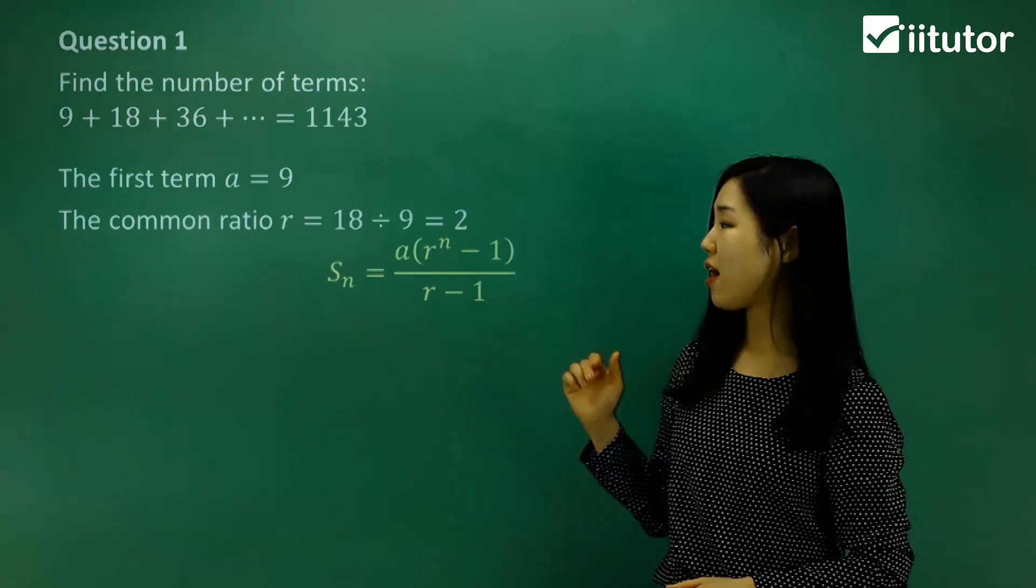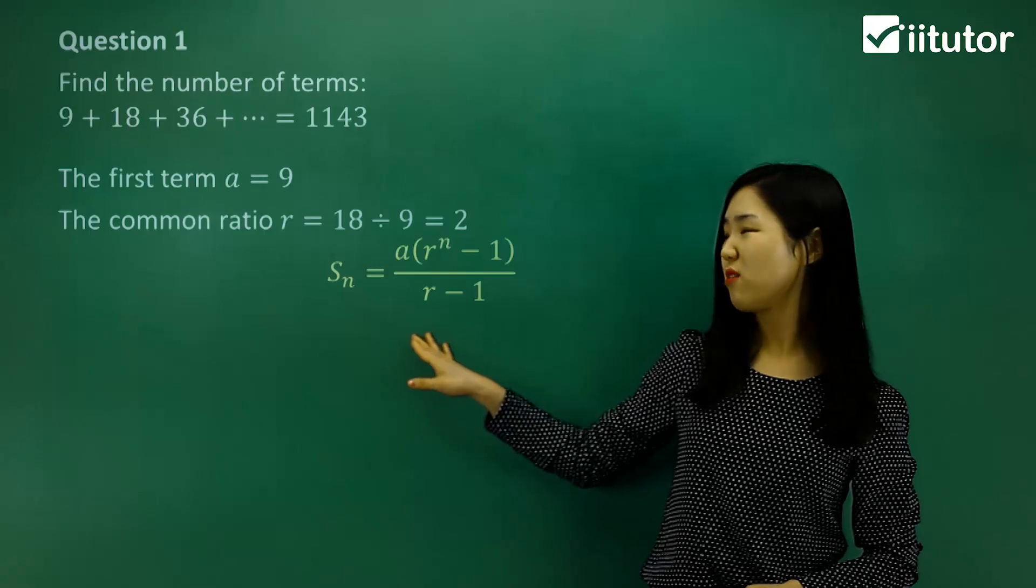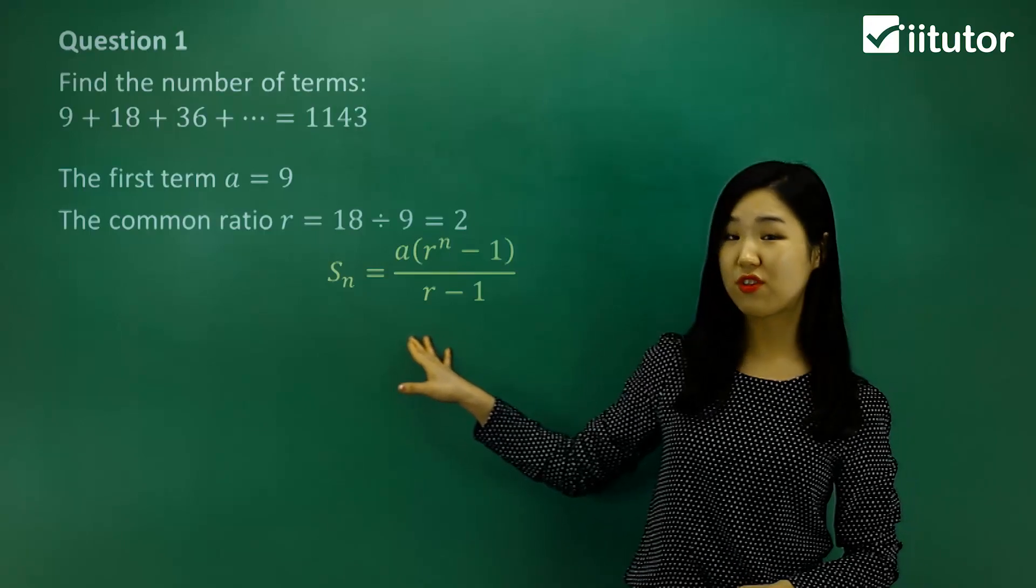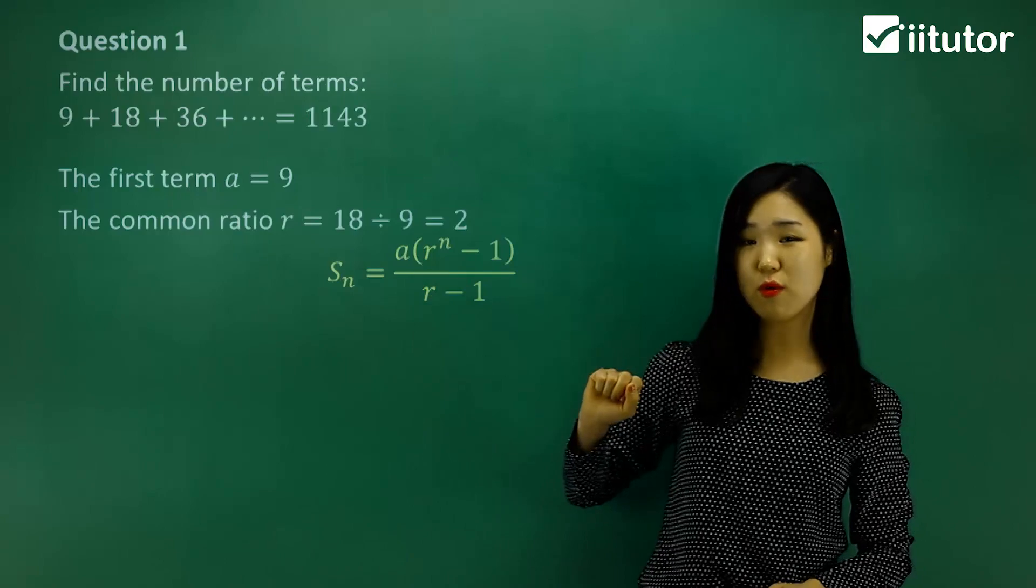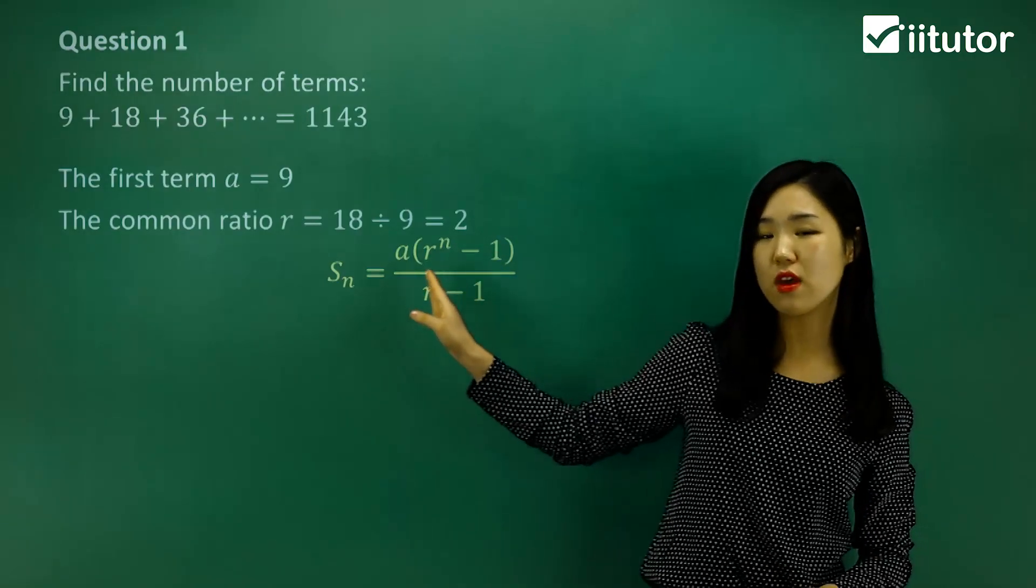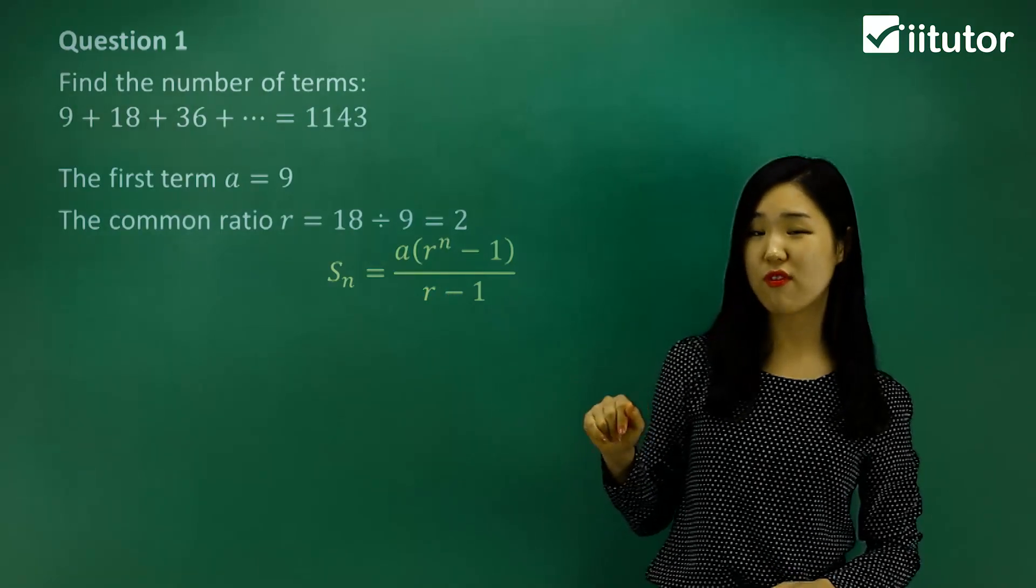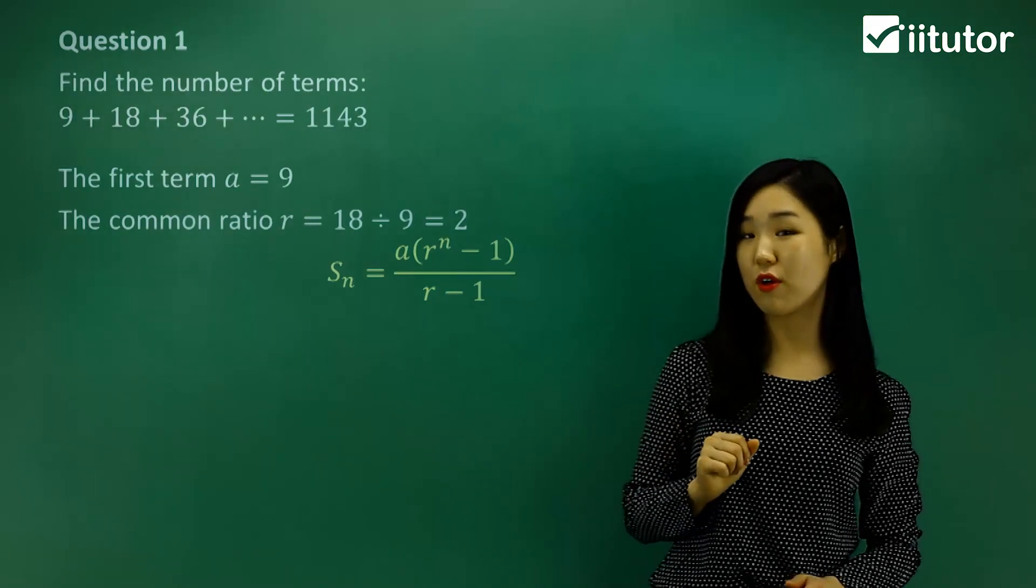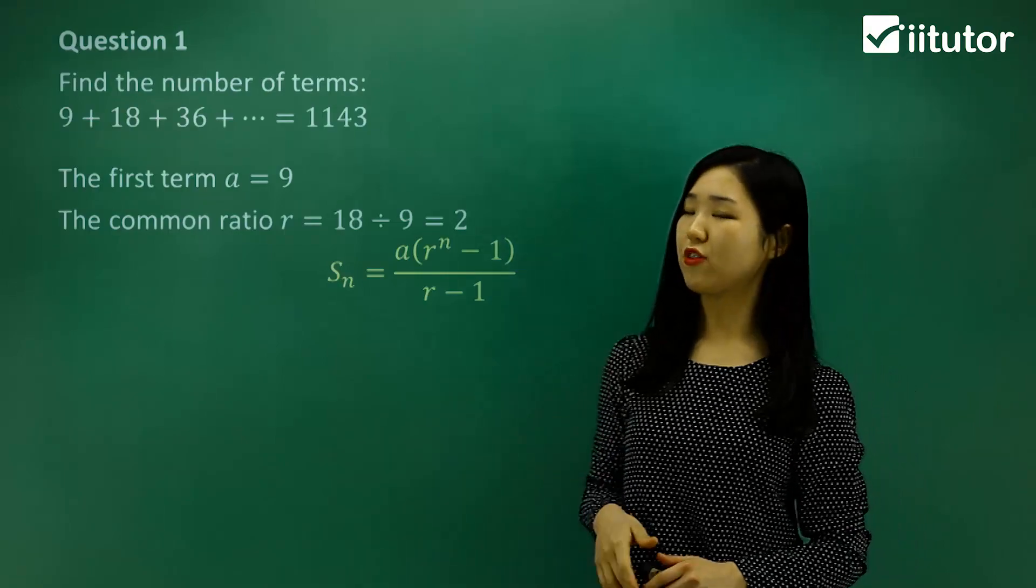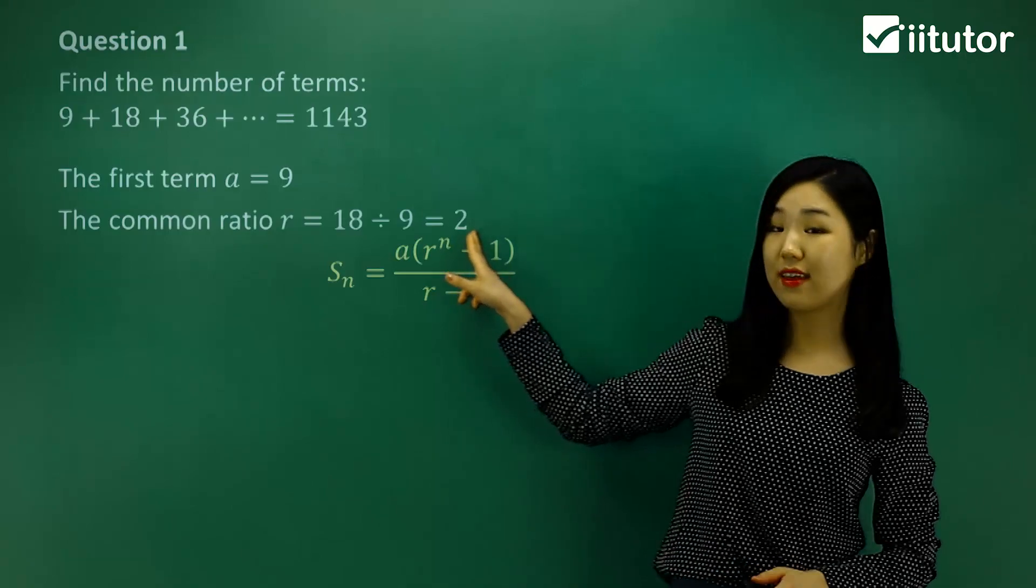So we're going to be using our series formula. I'm going to use this formula guys. Usually when the common ratio is greater than 1, I like to use this formula, r to the power of n minus 1 over r minus 1, where r comes first. But usually if the common ratio is less than 1, I prefer using the other one. It's just easier to solve that way in terms of algebra. So preferably I'd like you to use this when the ratio is greater than 1, in this case it is.